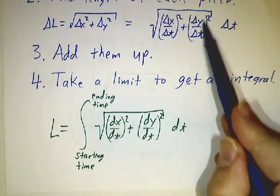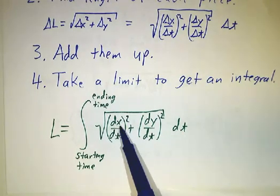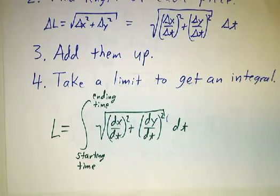Instead of Δy/Δt, we get dy/dt. So it's (dx/dt)² + (dy/dt)², all square rooted, integrate that with respect to t.